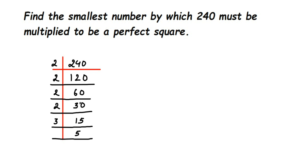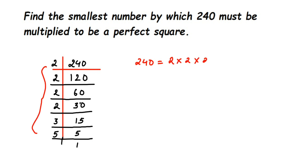Now 5 is a prime number, so 5 ÷ 5 = 1. Now let's rewrite this. So 240 is equal to 2 × 2 × 2 × 2 × 3 × 5.